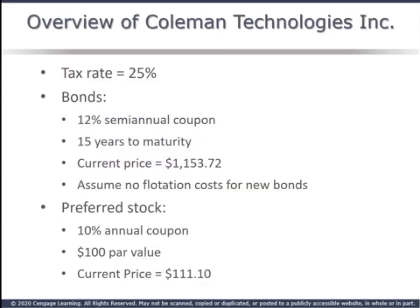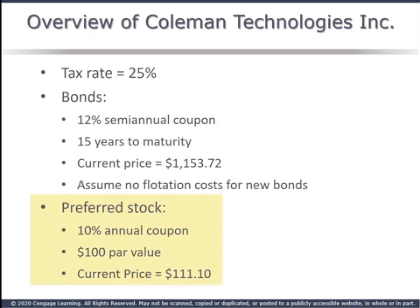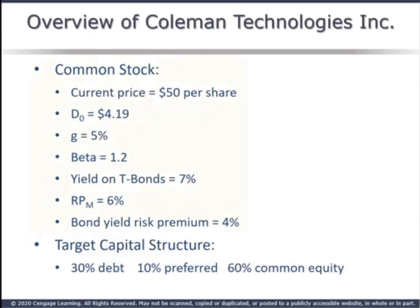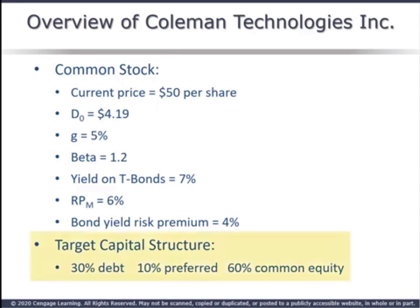Let's work through an example. Coleman Technologies has a 25% tax rate. They have bonds outstanding with a 12% coupon paid semi-annually and 15 years to maturity, currently selling for $1,153.72. Ignore any flotation costs for new bonds. Coleman has preferred stock with a 10% annual coupon currently selling for $111.10. Note that the $100 par value is irrelevant in our calculation. Coleman's common stock is selling for $50 a share; the last dividend was $4.19, and Coleman expects this dividend to grow at a constant 5% forever. Coleman's stock has a beta of 1.2, the current yield on treasury bonds is 7%, and the market risk premium is estimated to be 6%. A bond yield risk premium is estimated at 4%. Coleman's target capital structure is 30% debt, 10% preferred, and 60% common equity.